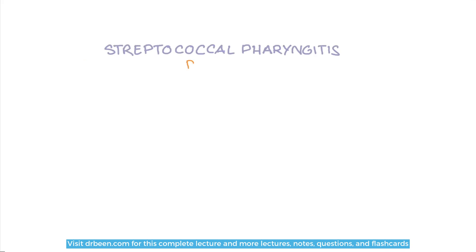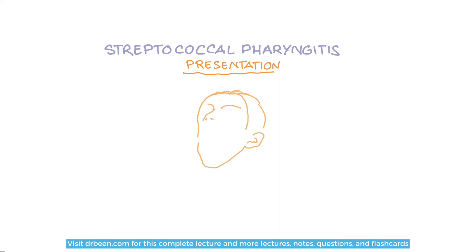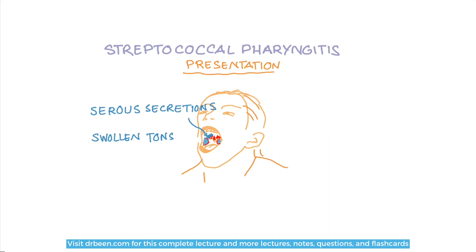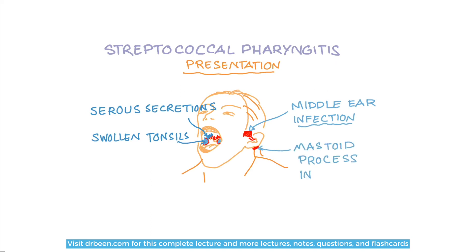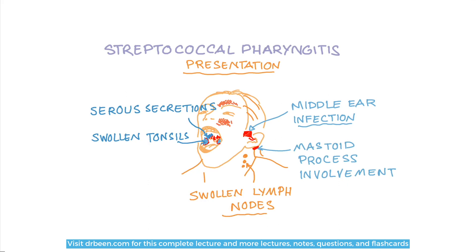In the case of pharyngitis in small children, there is a serious membrane on the pharynx and it is possible that the middle ear and mastoid process are involved in the infection as well. On the other hand, for older children and adults, this infection is much more intense and severe, and there can be intense tonsillitis, pharyngitis, sinusitis, and the middle ear may or may not be involved.